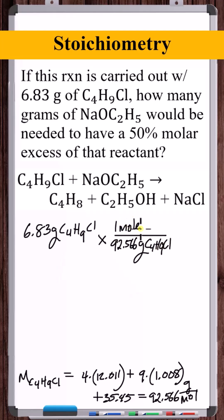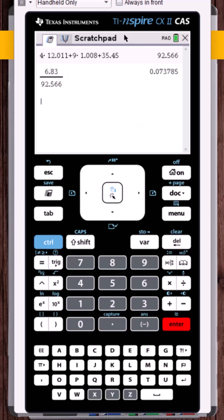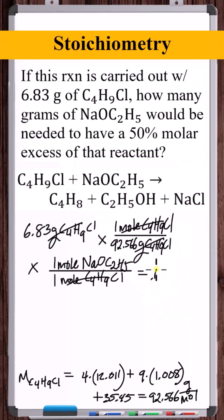Now based on stoichiometric equivalencies, for every one mole of C4H9Cl consumed, one mole of NaOC2H5 is consumed. So now we're in moles of NaOC2H5. Let's multiply this out. 0.073785 moles of NaOC2H5 will stoichiometrically react with 6.83 grams of C4H9Cl.